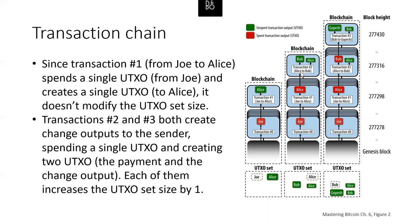A few blocks later in block 277316, Alice buys a cup of coffee from Bob. She spends her original transaction from block 277298 but creates two outputs: the first is the payment to Bob of 0.015 BTC, and the other is change back to Alice of about 0.0845 BTC. The original transaction is now spent in the UTXO set, and two new UTXOs are created — Bob's payment for the coffee and Alice's change.